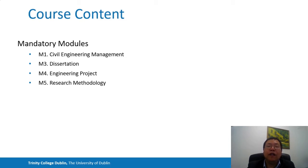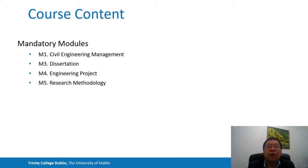The M3 dissertation module allows students to complete an individual research project on a topic of contemporary engineering research interest. The main objective of this module is to train students to plan, execute, and report on an individual engineering research project.